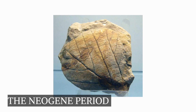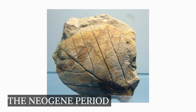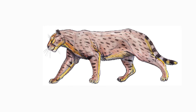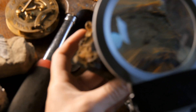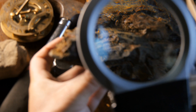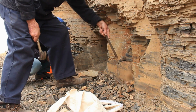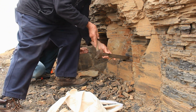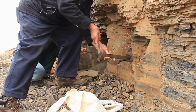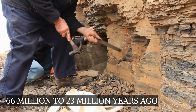The Neogene period is the second of the Cenozoic era's three divisions. The Neogene, which means newborn, was named for the fact that the marine and terrestrial fossils discovered in these strata were more closely connected to each other than those found in the Paleogene period before it, that is about 66 million to 23 million years ago.